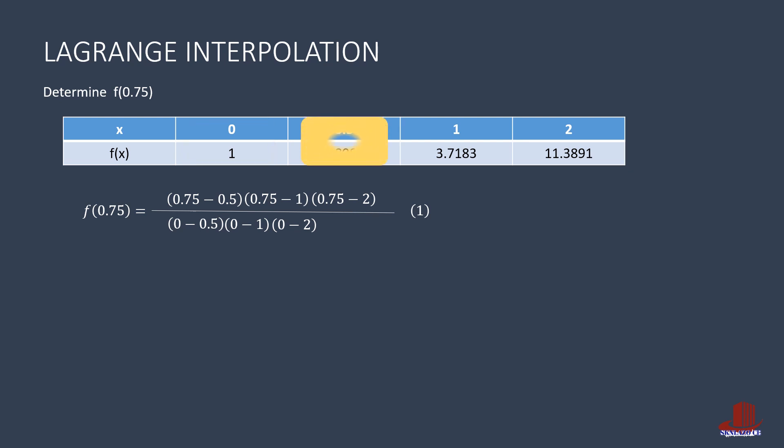The second term is identified by covering the second data point. The ratio has a numerator with 0.75 minus 0 times 0.75 minus 1 and 0.75 minus 2. The denominator consists of 0.5 minus 0 times 0.5 minus 1 times 0.5 minus 2. Then the y difference with this term is 1.8987.